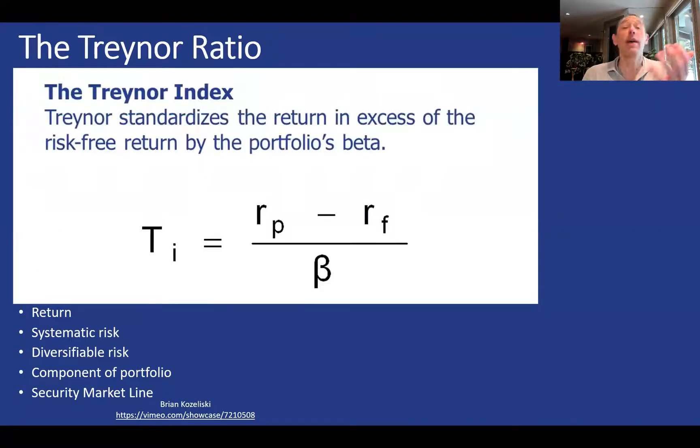In contrast, we have the Treynor measure. So again, we're talking about return here minus the risk-free rate. And instead of dividing by standard deviation, we're going to divide by beta. In this case, all we care about is systematic risk. We don't care about the diversifiable risk. That can be diversified away. This makes sense when we're talking about a component of a portfolio.